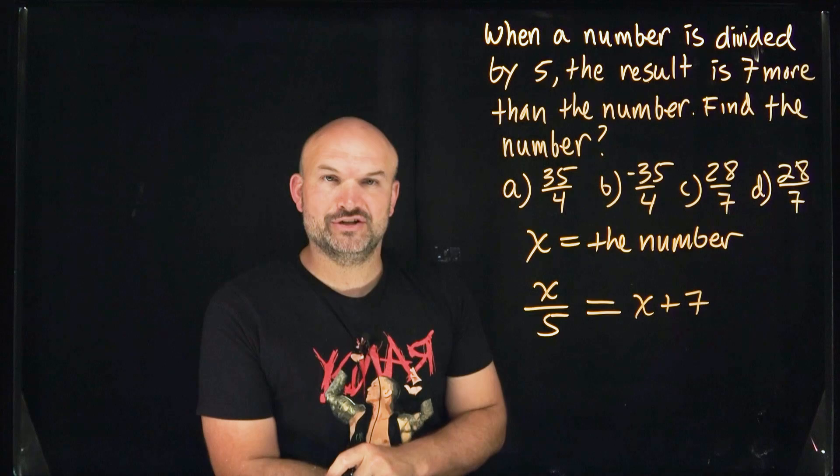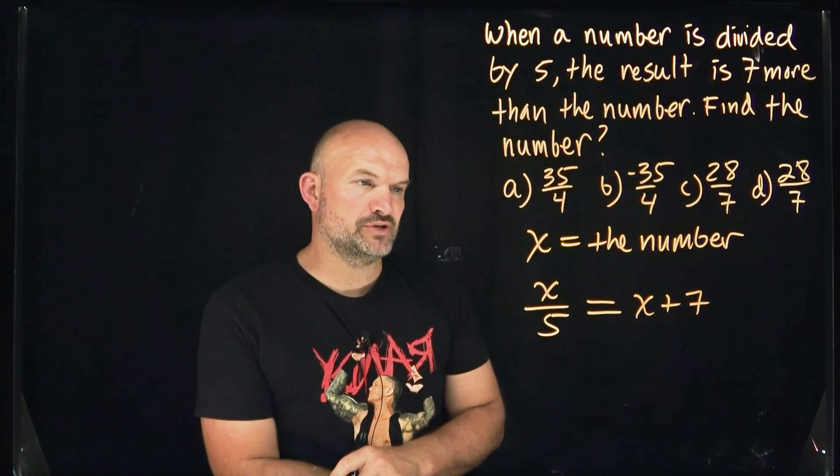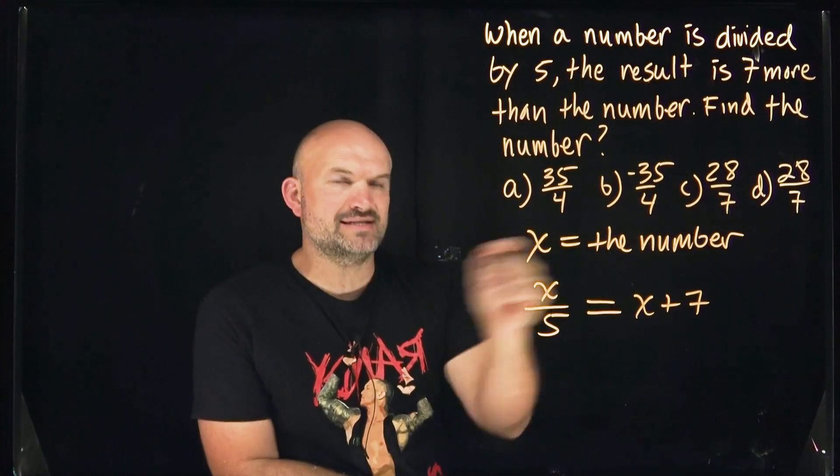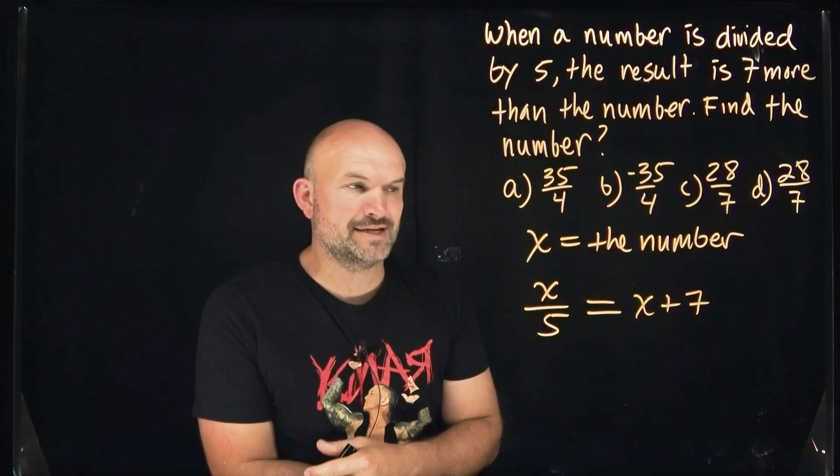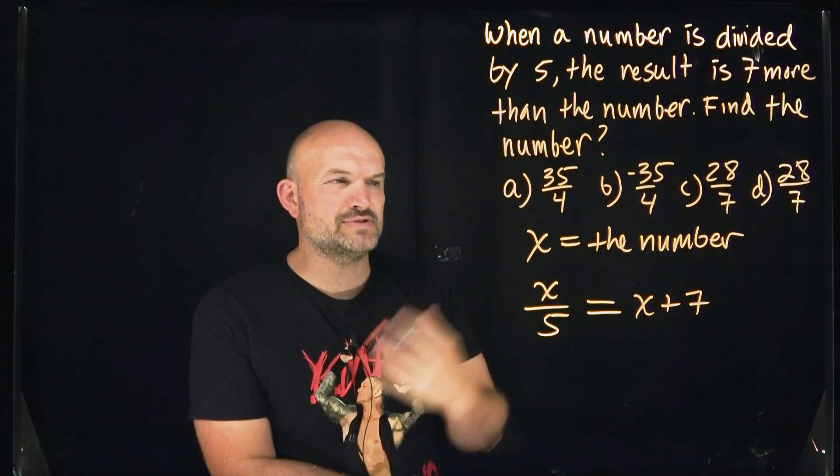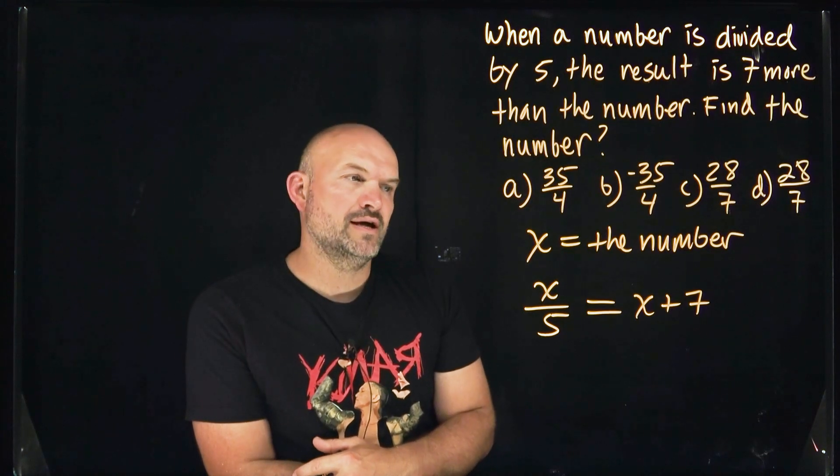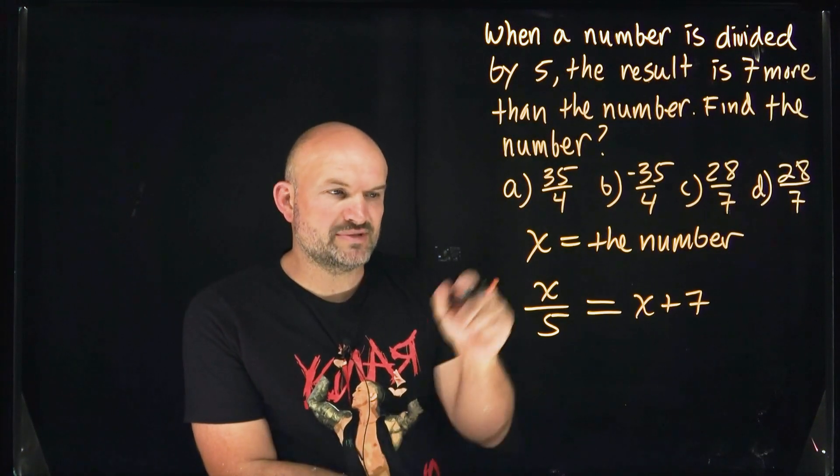Now, all we simply need to do is understand how to solve. We have X's on both sides, and that gets pretty tricky for a lot of students, especially when we need to isolate or solve for the X. A lot of times we say get the X's to the same side, but I want to do something first before I do that. And what I want to do is get rid of this division. I don't like fractions, right?